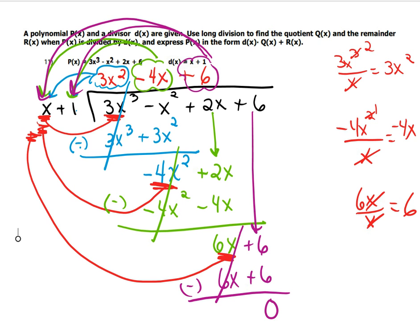Now it does say, express p(x) in the form of d(x) times q(x) plus r(x). I need some space over here.